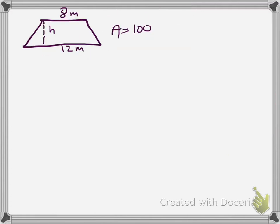So in this trapezoid, a few things are given. One, I know that the upper base is 8 meters, the lower base is 12 meters, the area of the whole trapezoid is also given as 100 meters squared, but I don't know the height.